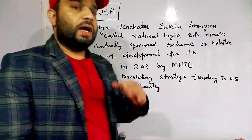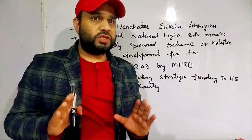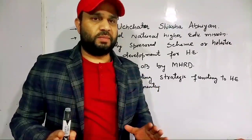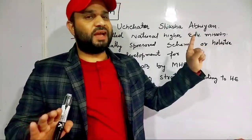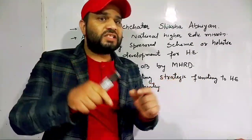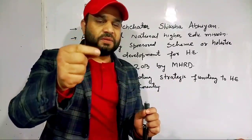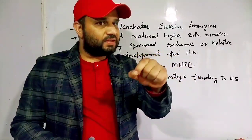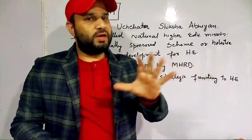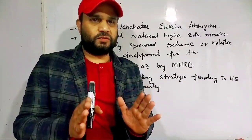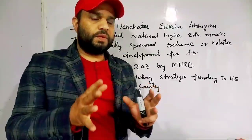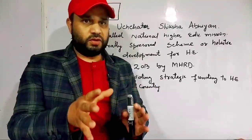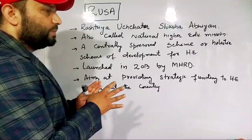Yesterday I told you that under RUSA, you have to study three things: its background, objectives, and funding. These three are very very important. All the points I covered in RAMSA, you have to remember those as well. If you need more details, notes are available — I'll put the link in the description. You can buy those notes, and they will definitely help you in your studies.